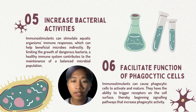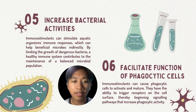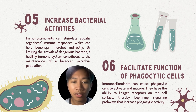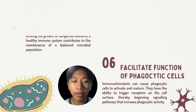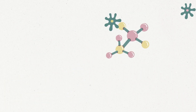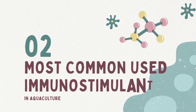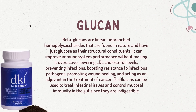Facilitate function of phagocytic cells: immunostimulants can cause phagocytic cells to activate. They have the ability to trigger receptors on the cell surface by initiating signaling pathways, facilitating the function of phagocytic cells to activate, monitor, and control immune responses.